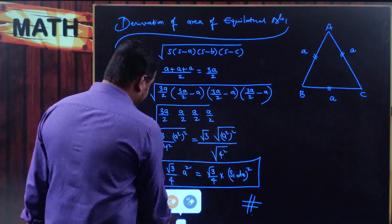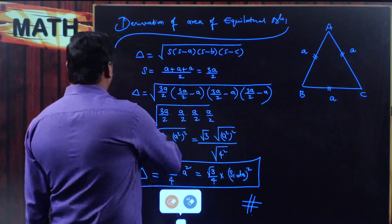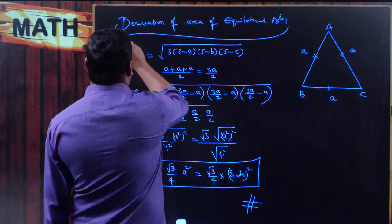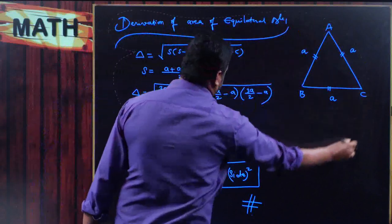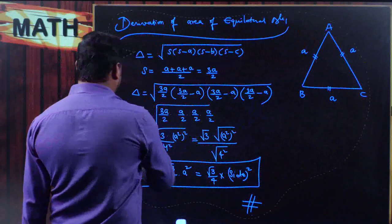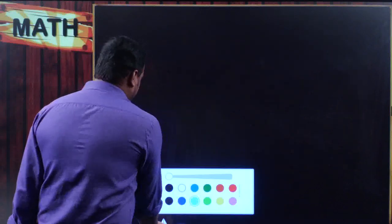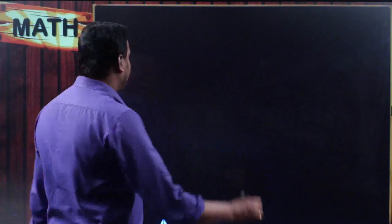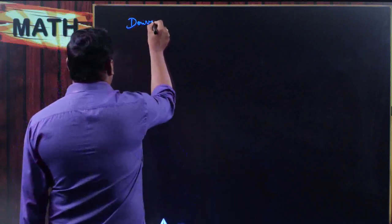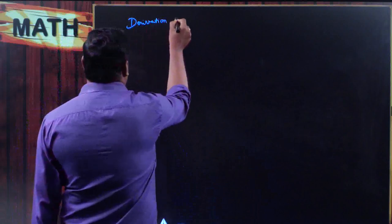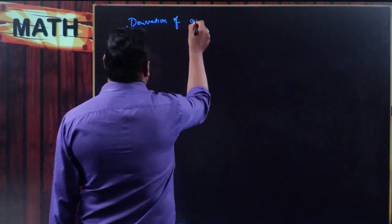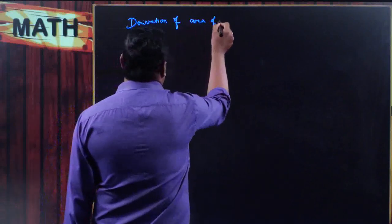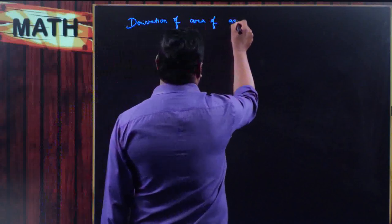Moving on to the next one — how to derive the formula for area of isosceles triangle. What do you mean by isosceles triangle? Isosceles triangle is nothing but when two sides are equal, then the triangle is said to be isosceles triangle. So I am going to work on the derivation of area of an isosceles triangle.